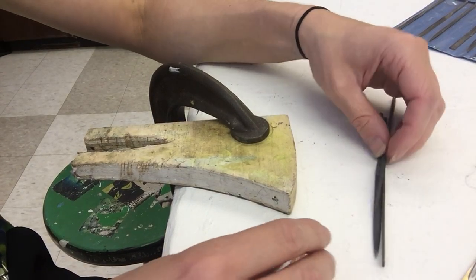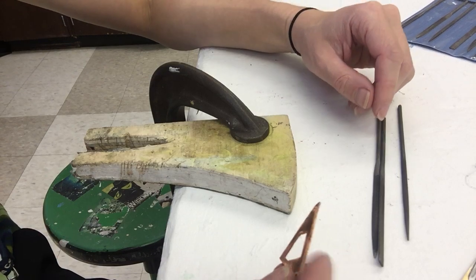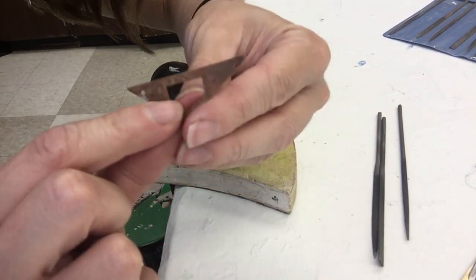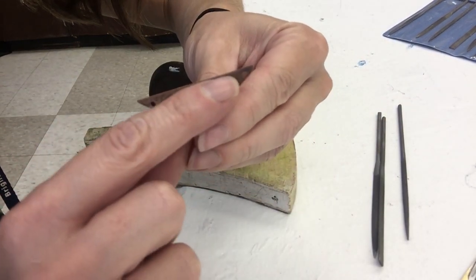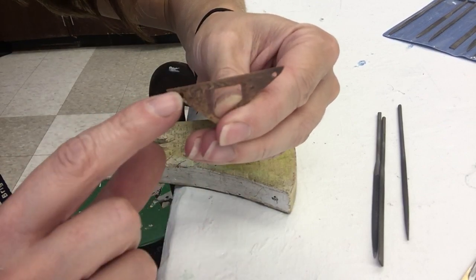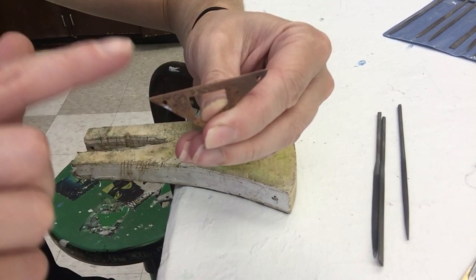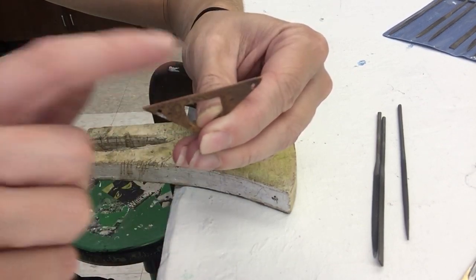Alright, so filing is something that can be very helpful, but you use it for bigger imperfections. So for instance, if I'm looking at this piece right here and I have a pretty straight line across, if I want to just clean it up slightly, a file might not be the best piece to use because a file might make some deeper grooves in this piece.